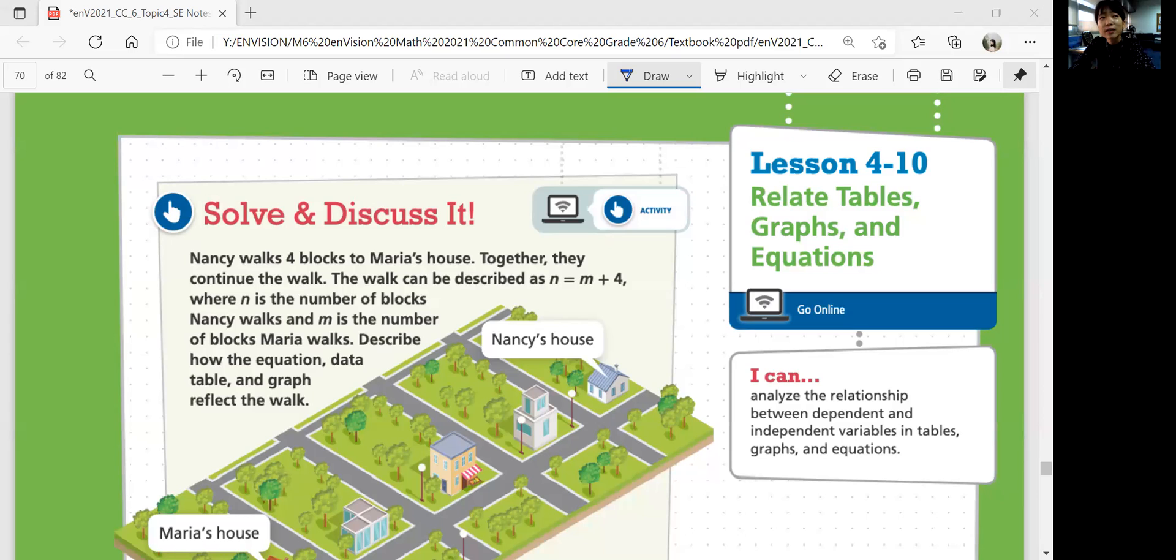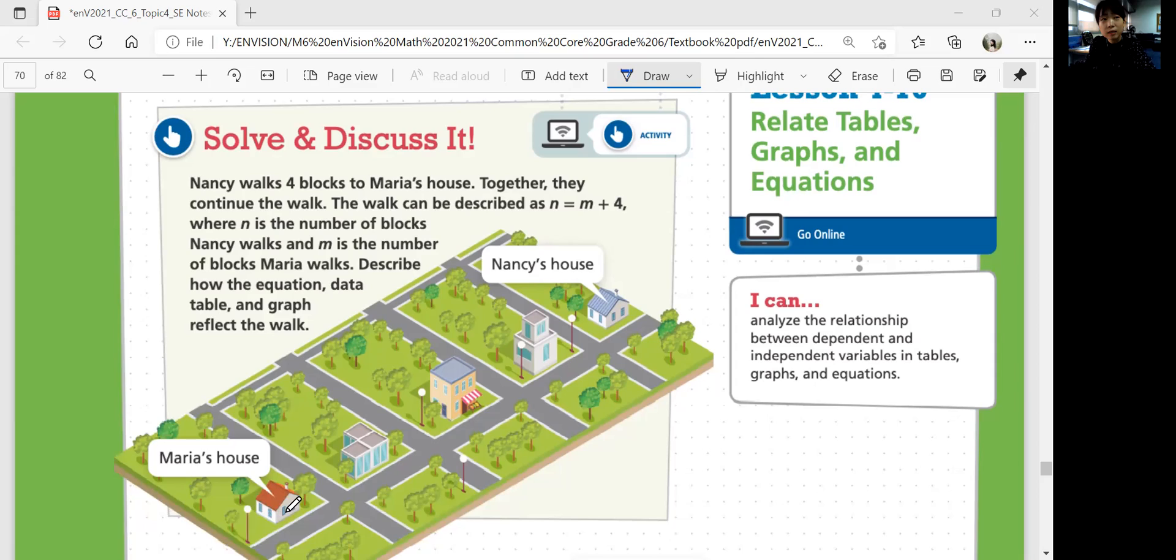Let's look at the solve and discuss question. Nancy walks four blocks to Maria's house. Together, they continue to walk. The walk can be described as n equals n plus four, where n is the number of blocks Nancy walks, and m is the number of blocks Maria walks. If you look at this map here, Nancy's house is right here. Maria's house is right here. The equation is n equals n plus four, where n is number of blocks Nancy walks - one, two, three, four.